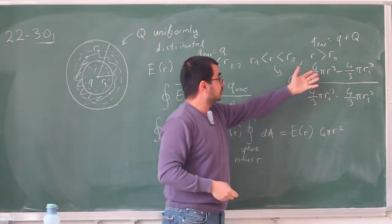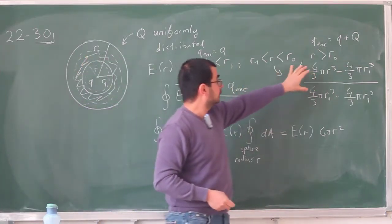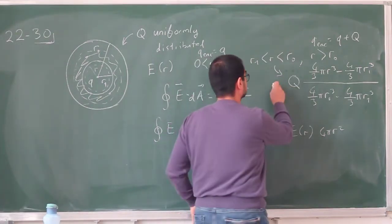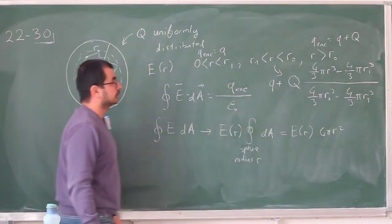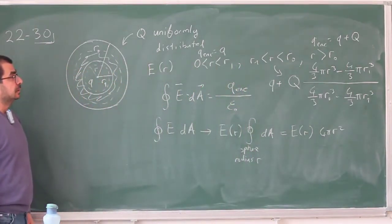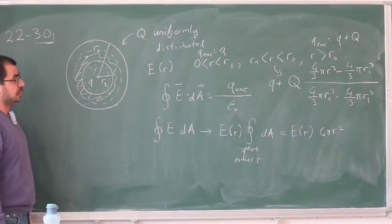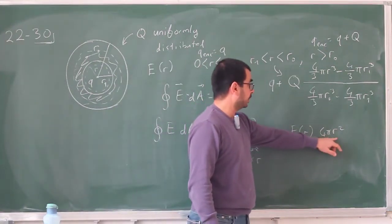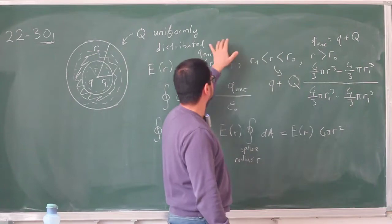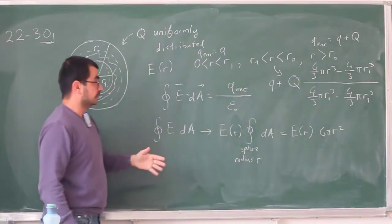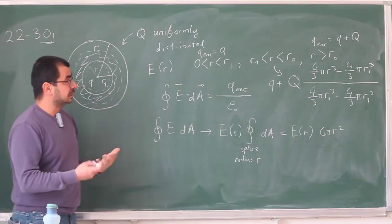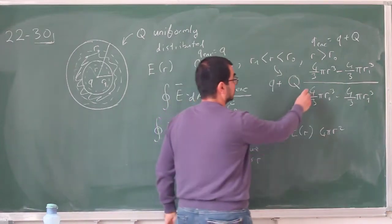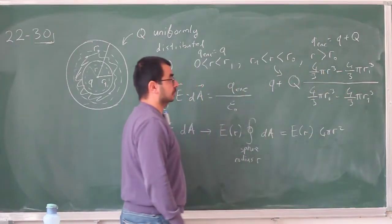And so the extra charge that is coming from the shell is going to be the ratio of these two volumes times the total charge in the full shell. To this, we are going to add the q at the center. So for the intermediate case, this will be the enclosed charge. And for all of these cases, you can calculate the electric field by saying that the electric field times 4π r squared is equal to the q enclosed divided by epsilon naught. So it's a little bit tedious perhaps, but it's very straightforward. And certainly there's going to be a lot of cancellations.